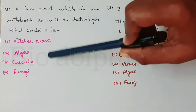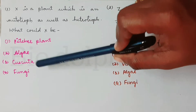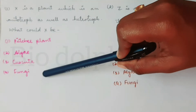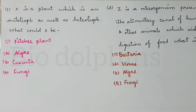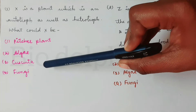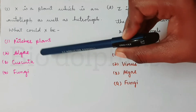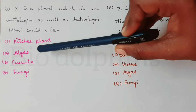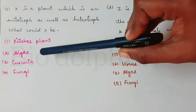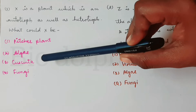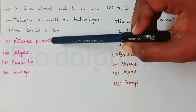Here we have options: Pitcher plant, algae, Cuscuta, and fungi. Fungi is saprophytic — it depends on dead and decayed material. Cuscuta also has no chlorophyll, so it is not heterotroph — it is a parasite but self-prepared in a different sense. So we narrow down to Pitcher plant.